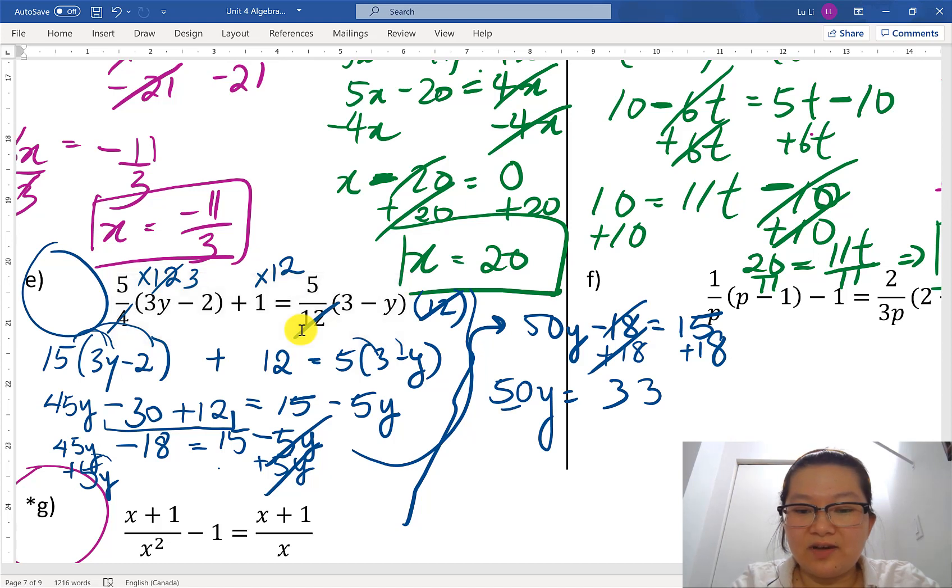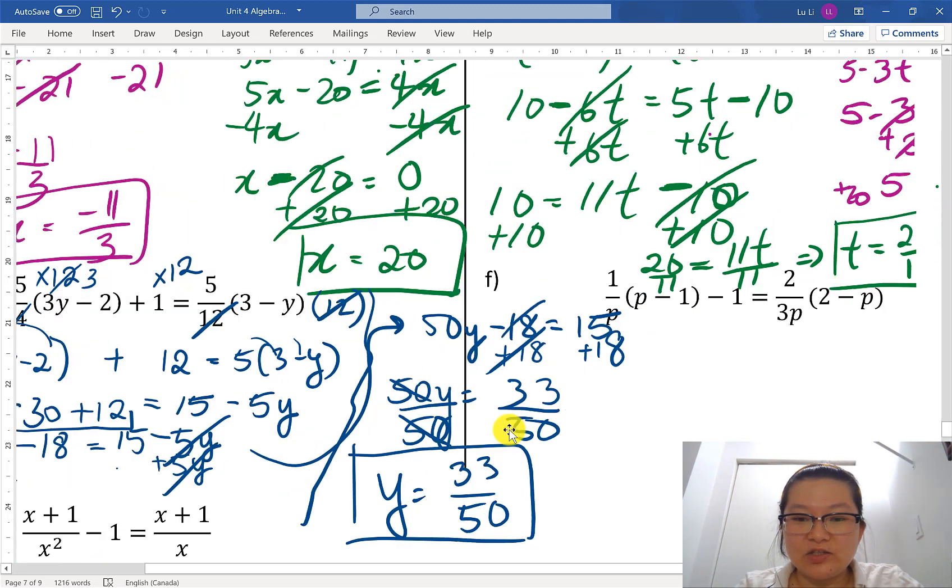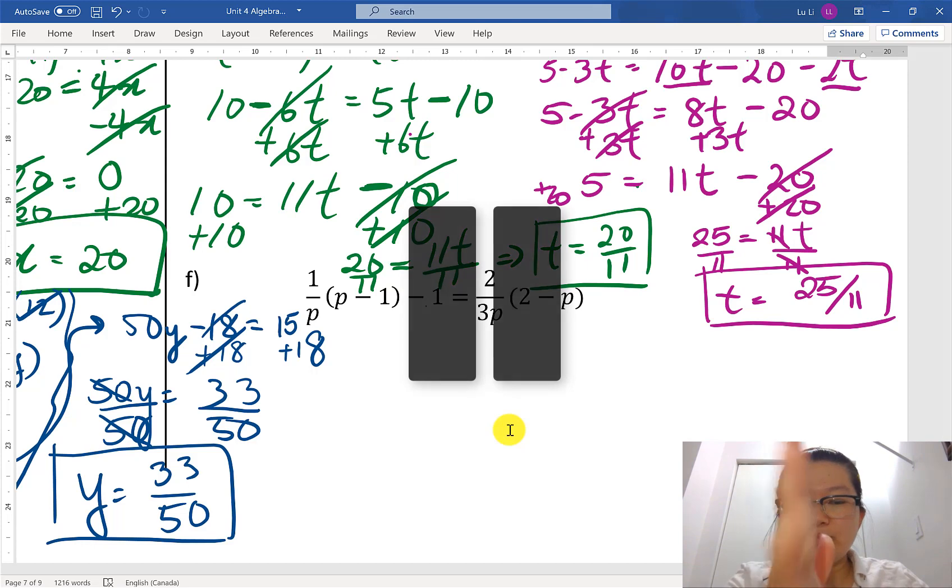Last but not least, dividing both sides by a coefficient here. Then I am left with y is equal to 33 divided by 50. You might think there might be a way to simplify it. But no, there's no way to simplify it. Then you can just leave this as your final answer. And that's it. So yes, don't forget to include every term. Make sure to treat all your terms fairly. Hey, guess what? It is your turn to try f. Let me just erase this 15 so you can see the p there.